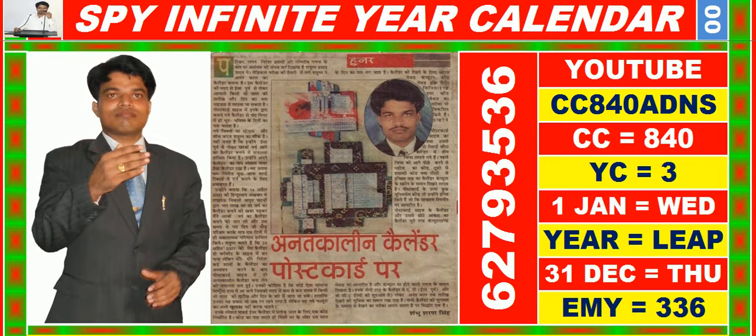In this video you are watching SPY Infinite year calendar for the year having calendar code equal to 840. You may also search it on YouTube by C. C. 840 A. D. N. S.